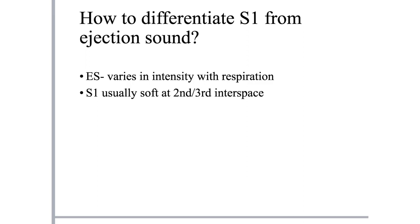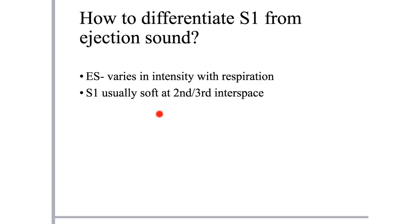To differentiate S1 from an ejection sound: ejection sounds from valvular pulmonary stenosis vary in intensity with respiration - that's one clue. Second, S1 is usually soft at the second or third left interspace, whereas an ejection click is louder there. S1 is heard best at the apex; if the sound is prominent at the pulmonary area, it is more likely an ejection click.